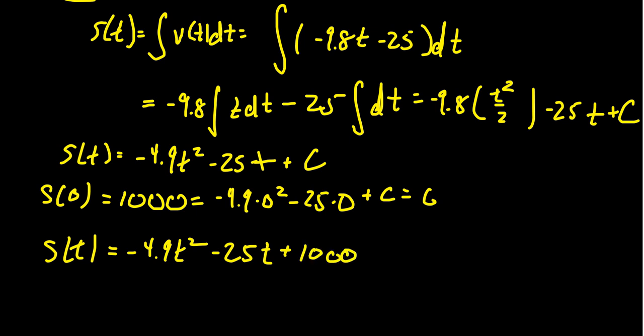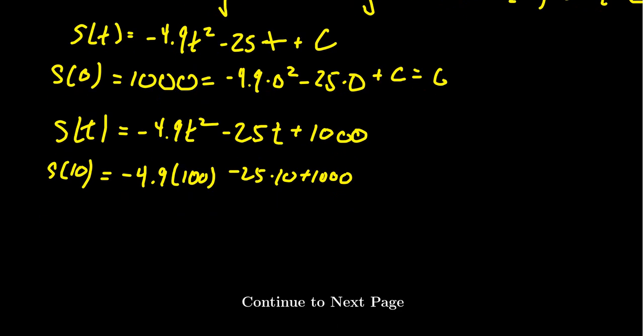Then we have to figure out what was the position after 10 seconds. We're trying to figure out what is s(10). We get -4.9 times 10², which is 100, minus 25 times 10 plus 1000. Multiplying by 10 moves the decimal place around. So we get -490, minus 250, and then we add that to 1000.